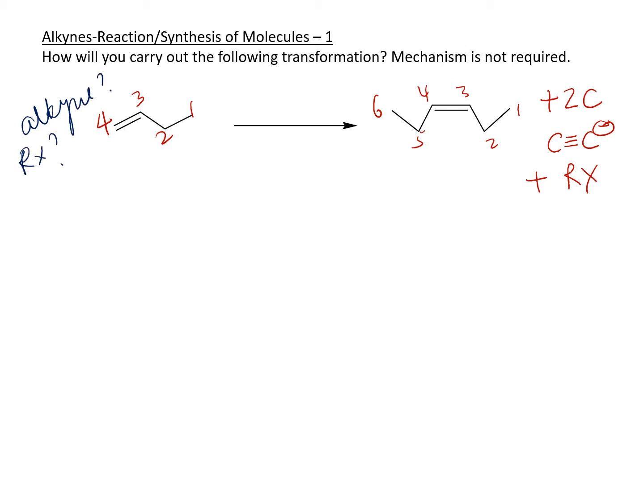So for that, I'm going to have to look at the double bond that I have between three and four here. And I also have a double bond here, also between three and four carbons. So which means that I need to either retain my double bond or I need to make it again.